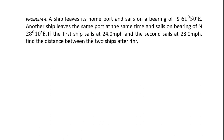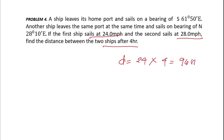We find the distances first. D1 equals 24 times 4 hours, which equals 96 miles. For the second ship: D2 equals 28 times 4 hours, which equals 112 miles. We'll compute the distances first and use them later.